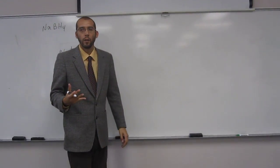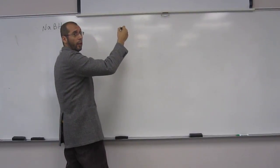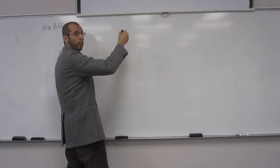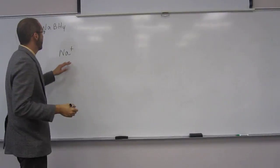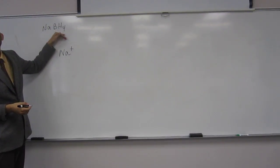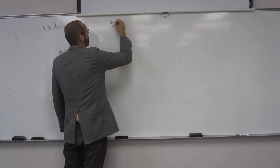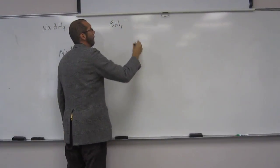So what do we know about boron? So normally it will want to have three bonds, right? But since we have a sodium plus on there, what must BH4 have on? A minus charge. So it looks like this, BH4 minus.